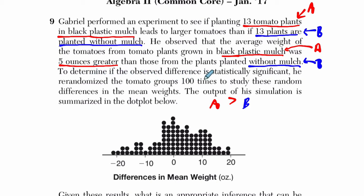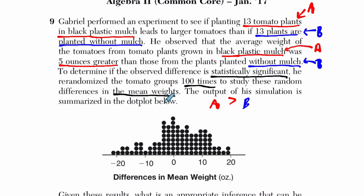To determine if the observed difference is statistically significant, he wants to know: wow, they're bigger in group A — but does that matter? So he re-randomized the tomato groups a hundred times in the simulation to study these random differences in the mean weights. The output of the simulation is summarized here.